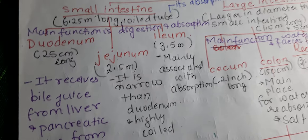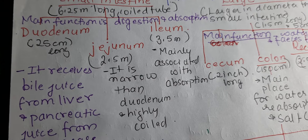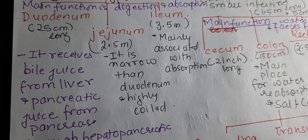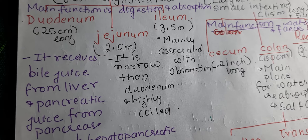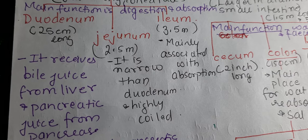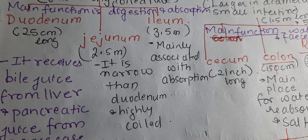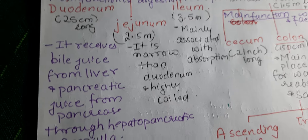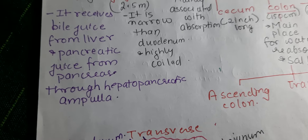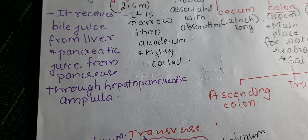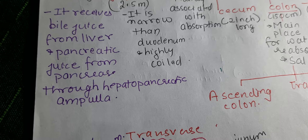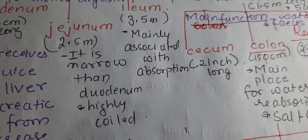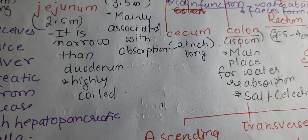The main parts of the small intestine are duodenum, jejunum, and ileum. Ileum is the longest part at 3.5 meters and jejunum is 2.5 meters. Duodenum is the smallest part, which mainly receives bile juices from the liver and pancreatic juices from the pancreas through the hepatopancreatic duct or ampulla.